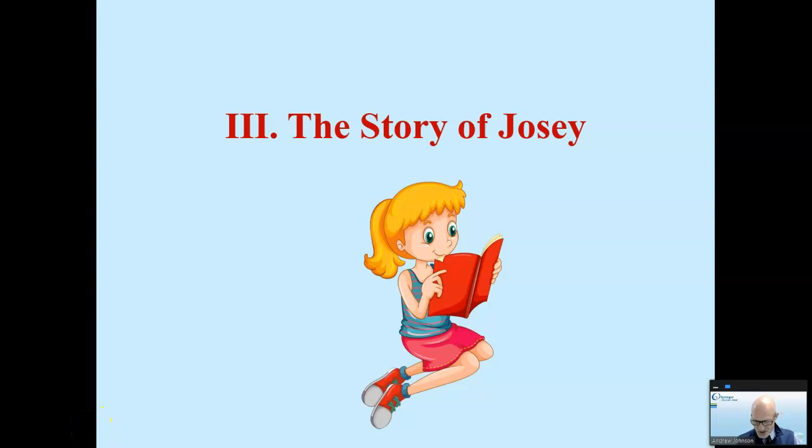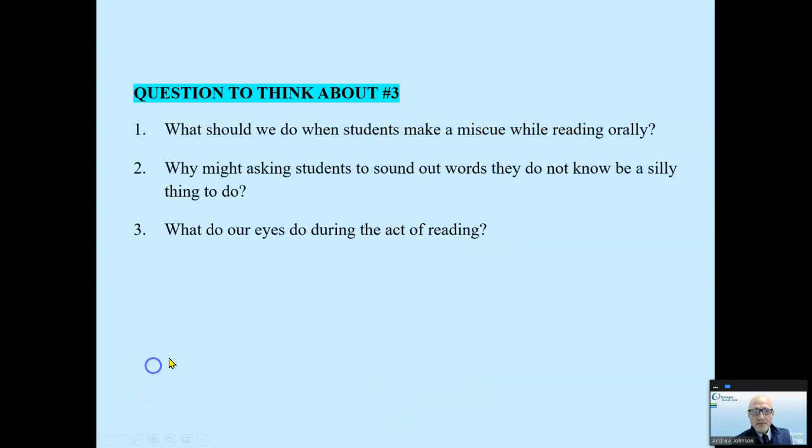This is part three of our presentation called The Story of Josie. Questions to think about, first of all: What should we do when students make a miscue while reading orally? Why might asking students to sound out words they do not know be a silly thing to do? And what do our eyes do during the act of reading?